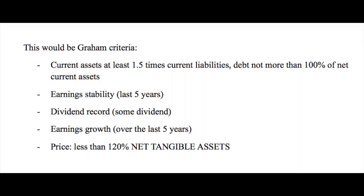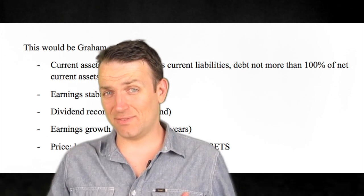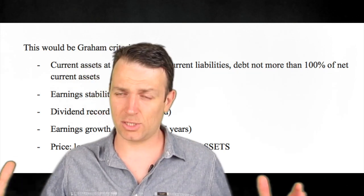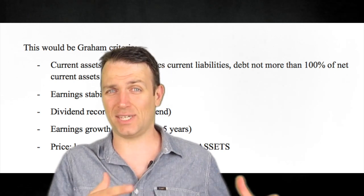Graham's criteria include: current assets at least 1.5 times current liabilities, debt not more than 100% of net current assets, earning stability over the last five years, a dividend record, earnings growth over the last five years, and price less than 120% of net tangible assets. To simplify, if Graham had to pick one or two criteria, it would be the price-to-earnings ratio and a well-diversified portfolio of stocks selling under net current asset value. Over the long term, value investing has beaten everything else in 94% of 10-year return periods over the past 90 years.